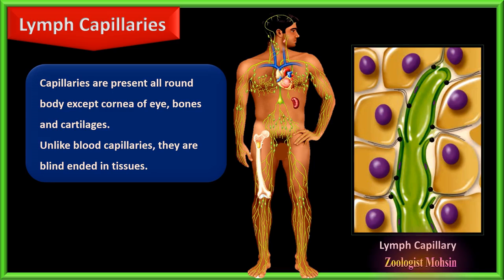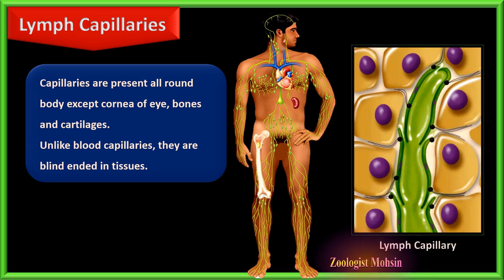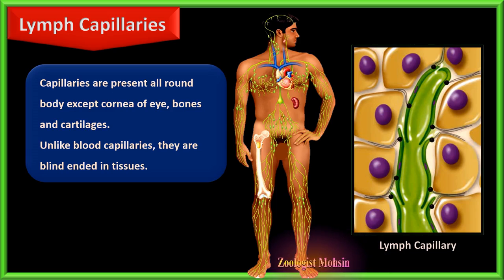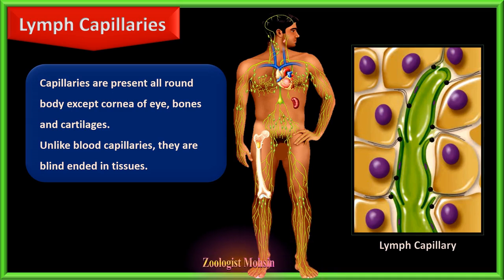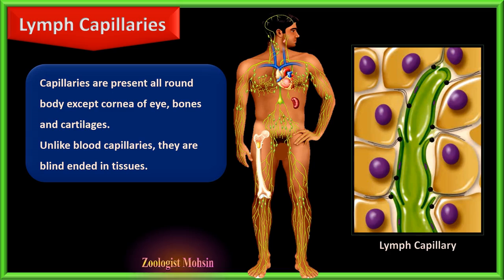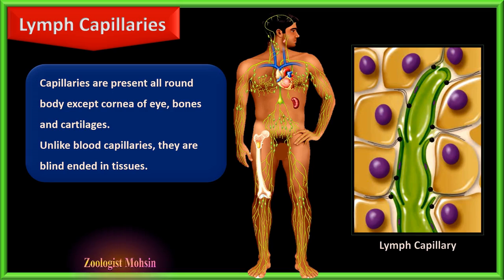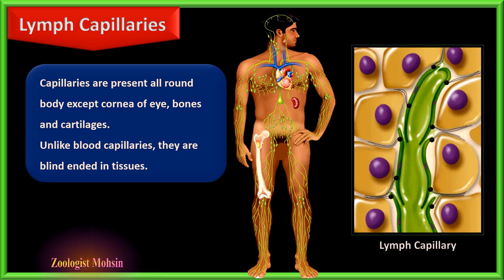Unlike blood capillaries, lymphatic capillaries are closed at one end. They consist of sacks of endothelial cells lying over one another. These endothelial cells are not tightly packed but have pores between them through which bacteria, lymphocytes, and other particles can enter along with fluid. You can observe in the diagram that the overlapping endothelial cells have pores that open and close based on pressure.